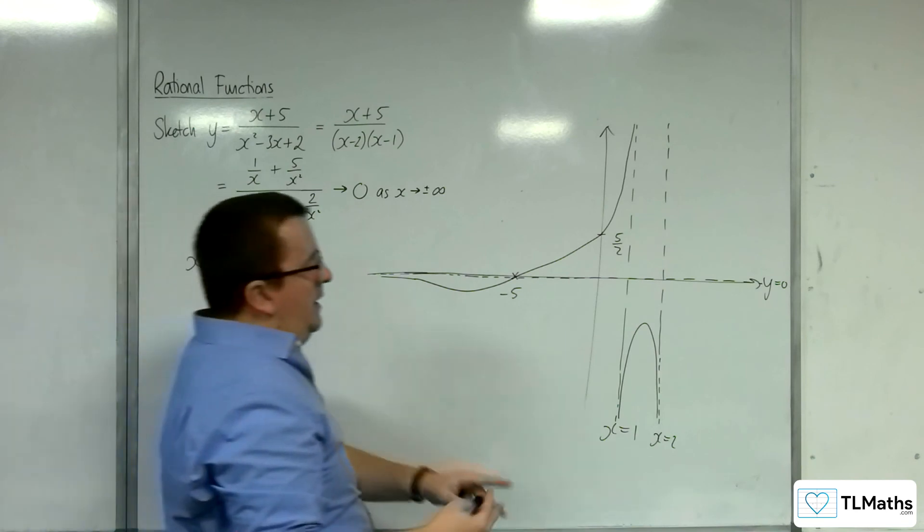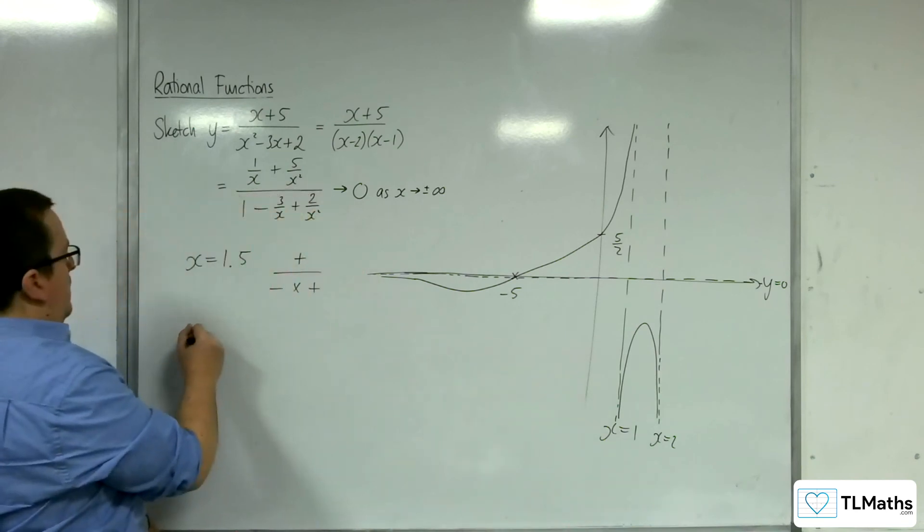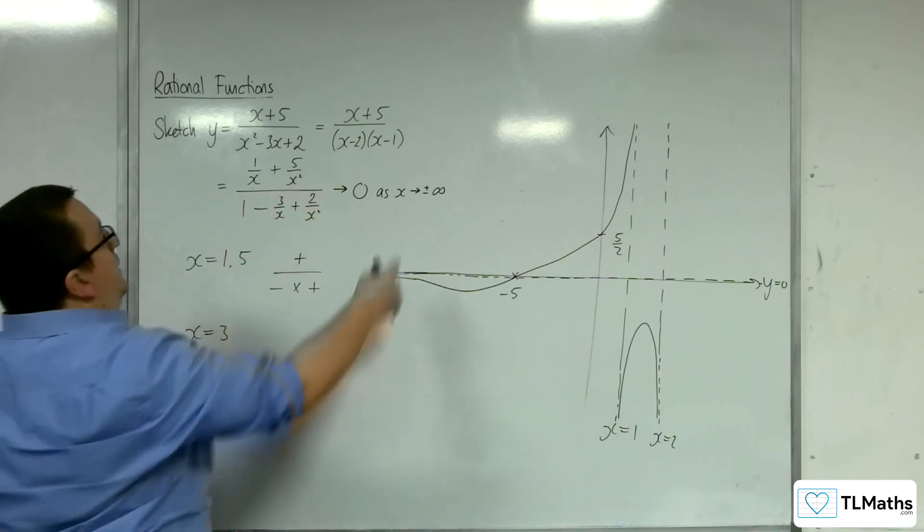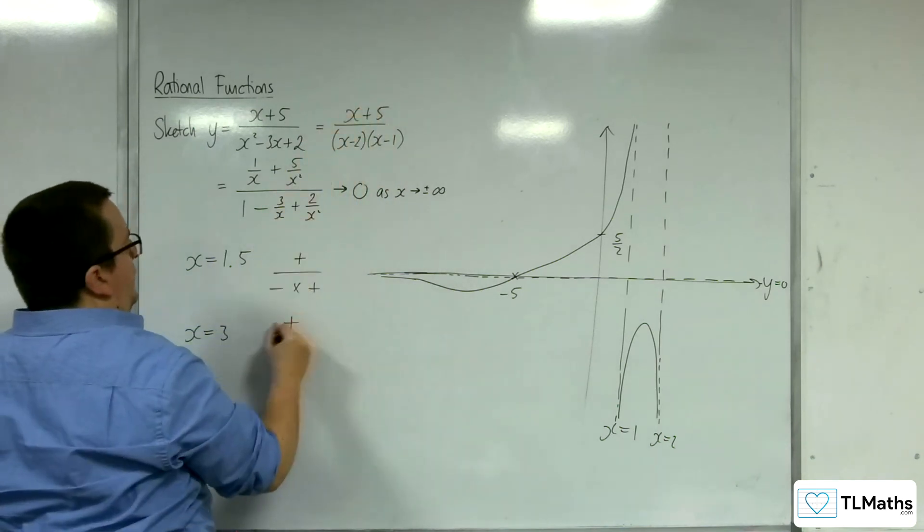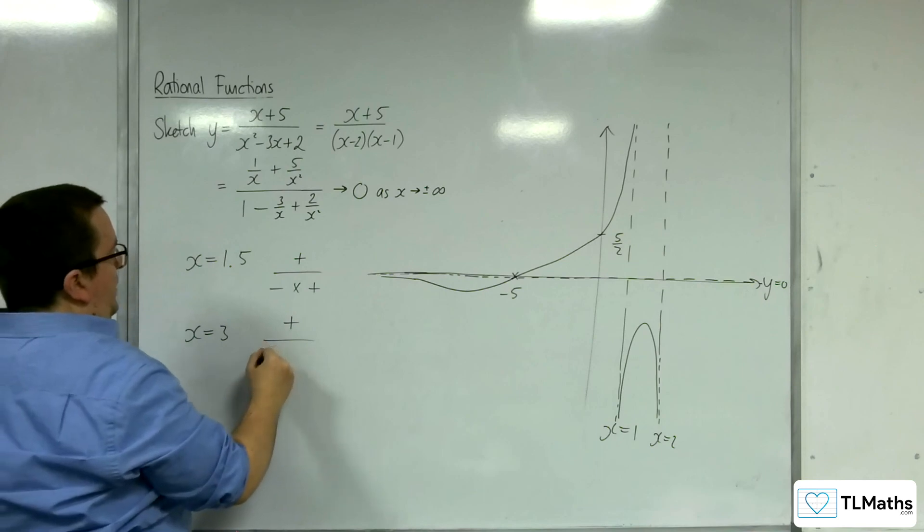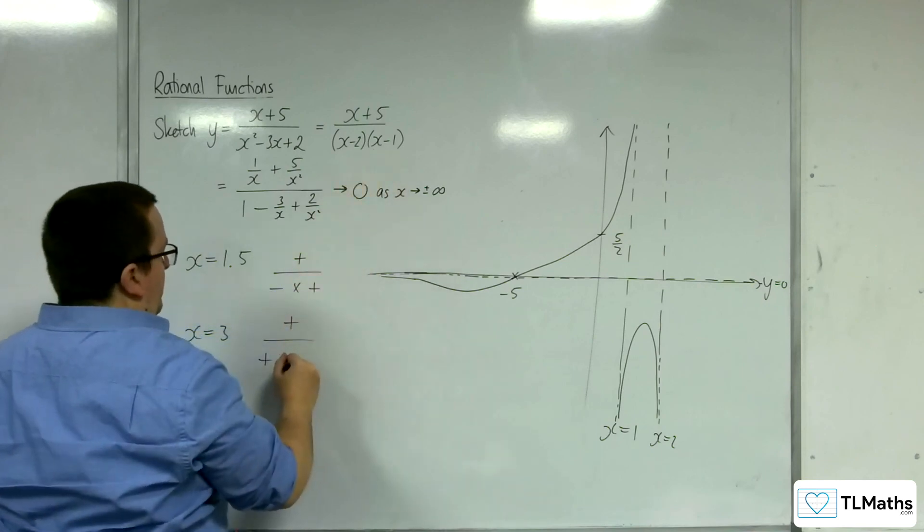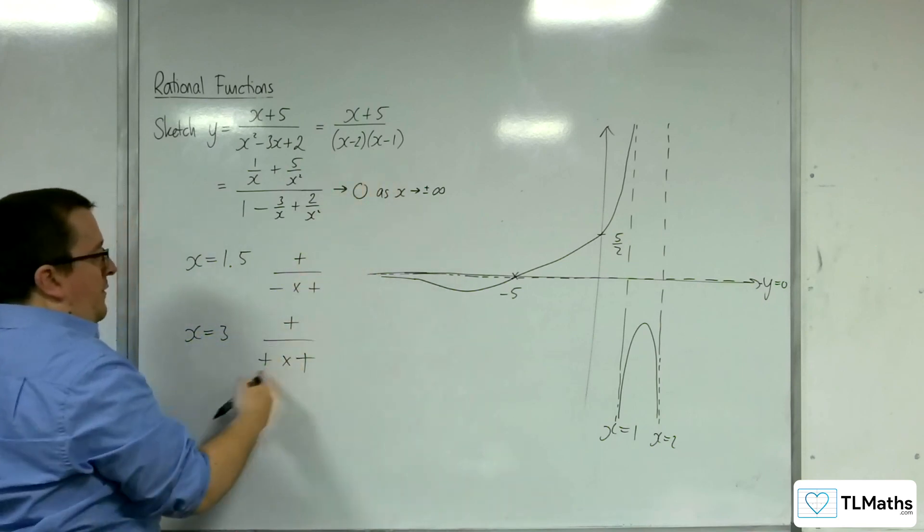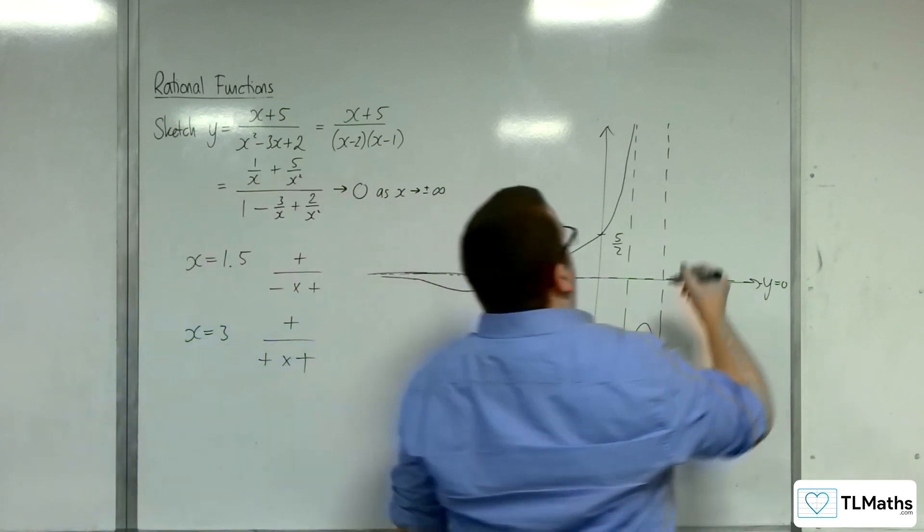Right, now I'm going to check x equals 3 and see what we get. So in the top numerator, we get positive. 3 plus 5 is positive. 3 take away 2 is positive. 3 take away 1 is positive. And so positive over positive, and so we must be up here.